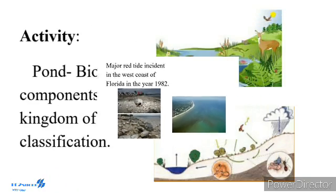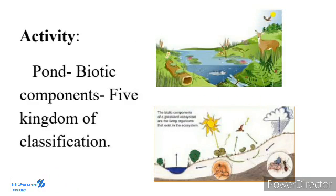Activity: Visit a pond and record the names of the biotic components. With the help of your teacher, tabulate the data and segregate them according to the five-kingdom classification.